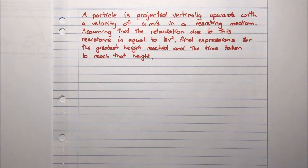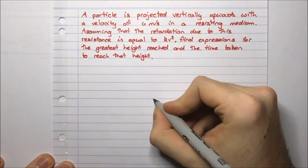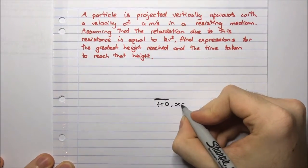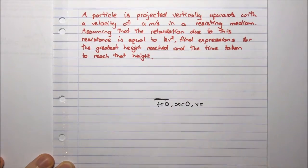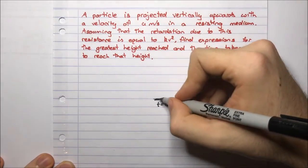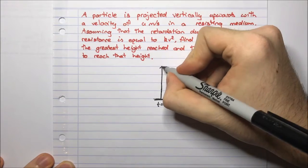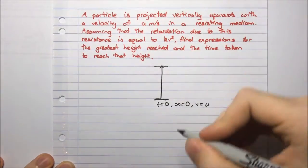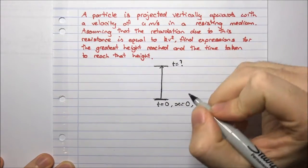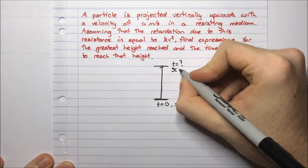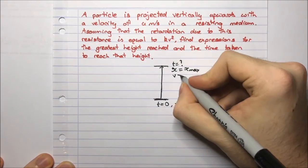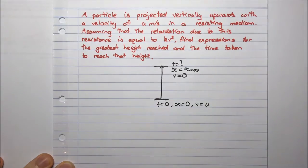The first thing we need to do is get a diagram showing all the forces acting on the particle. At the ground, t equals zero, x equals zero, and v equals u meters per second — that's our initial velocity. The particle travels up and reaches some maximum height. At that point we don't know the time or the x value, but we call it x max. We do know the velocity will be zero at the maximum height, because it has to stop before coming back down.